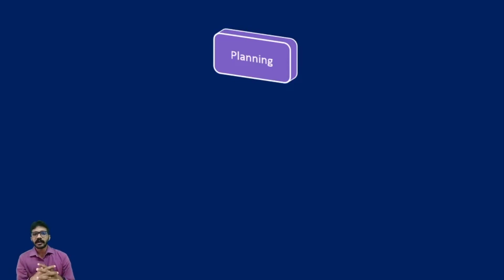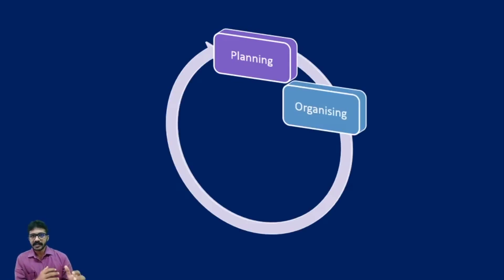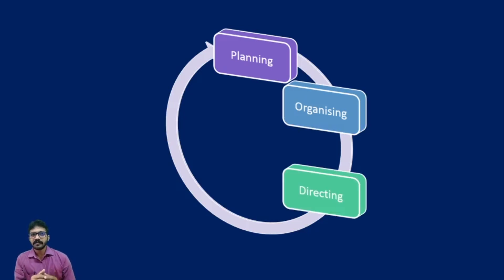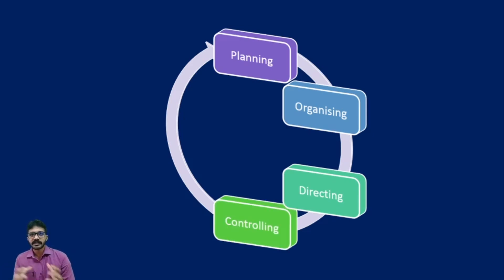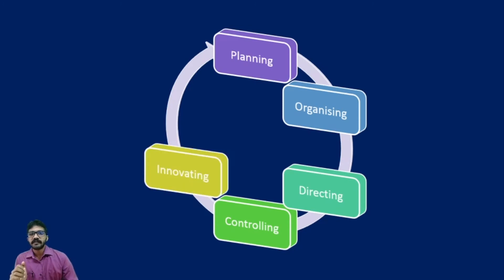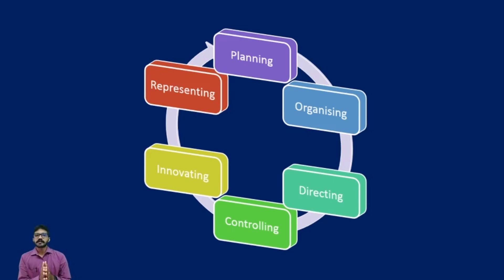These six functions form a circular, continuous process. First we plan things, then organize and allocate resources properly. Then leaders direct subordinates on how the work is to be done — experts helping trainees fulfill the organization's goal. There is a controlling process to ensure things happen as per plan and products are manufactured to standard. Then we keep on innovating for growth, and maintain the social responsibility properly. These are the functions of management, and that is all for this particular lecture.